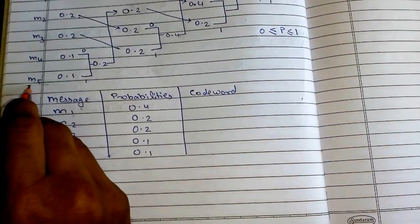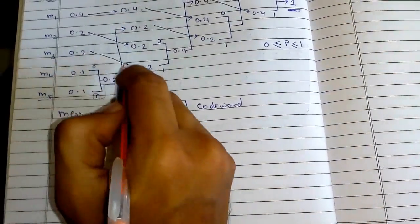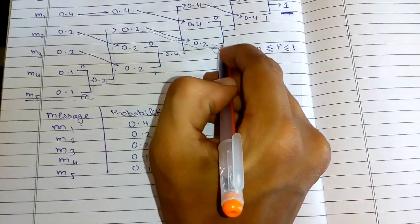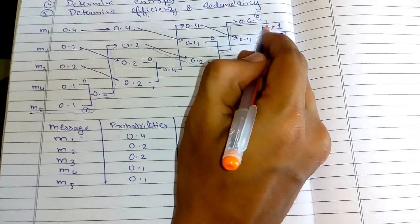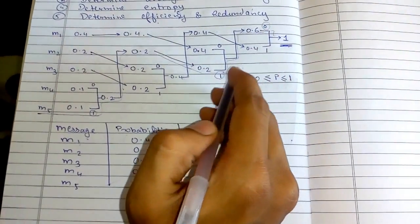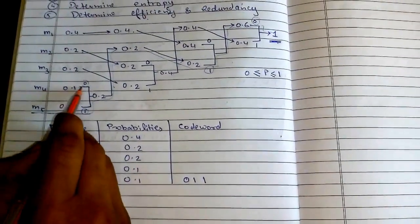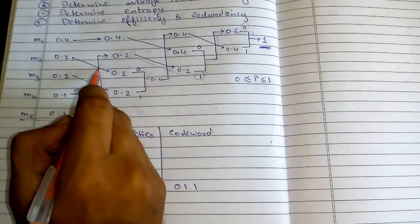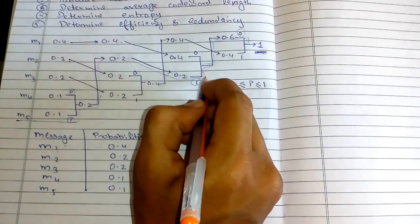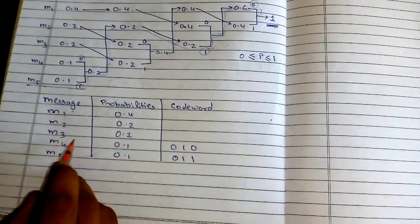We start from the bottommost codeword. M5 goes through this path: it first encounters 1, then goes through this path and again encounters 1, then encounters 0, and finally reaches 1. Writing the codeword in reverse order: 0, 0, 1, 1. For M4, it starts here encountering 0, then goes up encountering 1, then 0. So the codeword is 0, 1, 0.